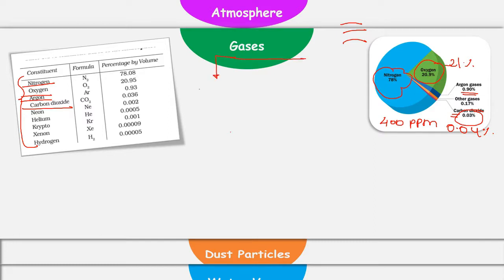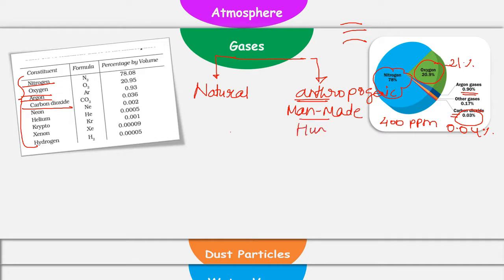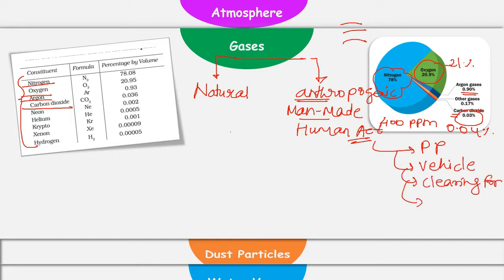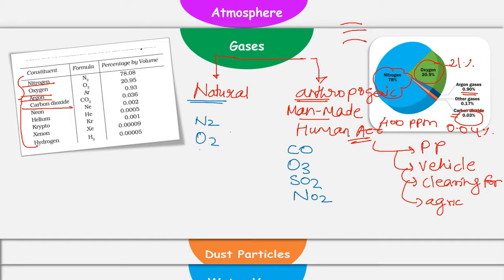Gases can be divided as naturally occurring gases and anthropogenic gases. Anthropogenic means man-made gases or gases which have been released because of human activities — like fossil fuel combustion in power plants, combustion of fuel in vehicles, clearing forests, or agricultural activities. Classical examples of anthropogenic gases are carbon monoxide, ozone, sulfur dioxide, and nitrogen dioxide. If you talk about natural gases, then it would be nitrogen, oxygen, carbon dioxide, hydrogen, and helium.